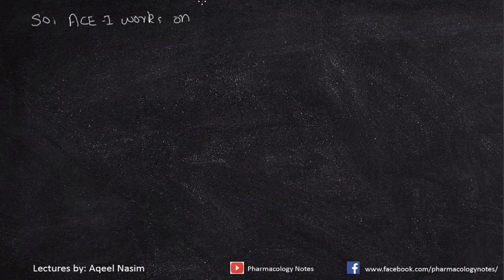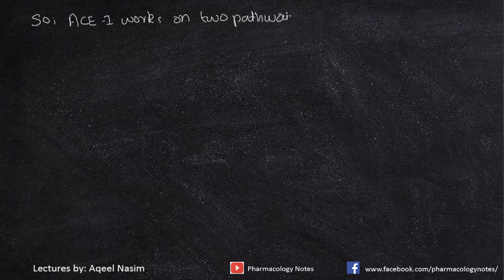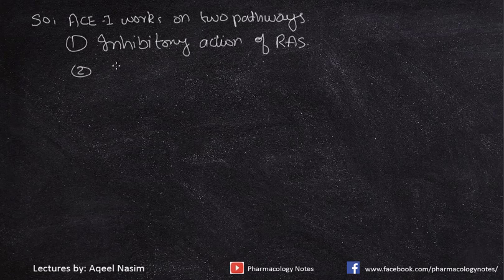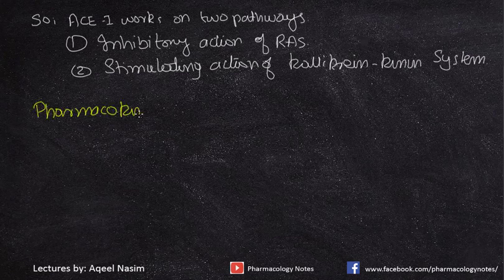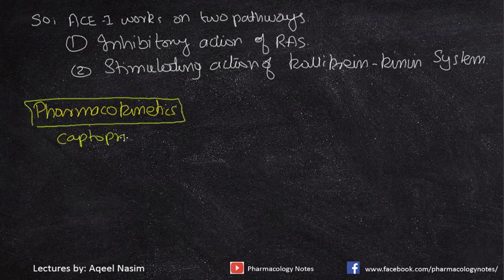In a nutshell, ACE inhibitors work on two pathways: first, the inhibitory action on the renin-angiotensin system (RAS system); and second, the stimulating action of the kallikrein-kinin system, as already mentioned.